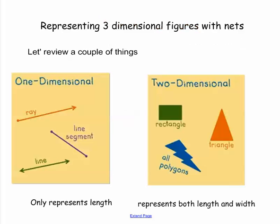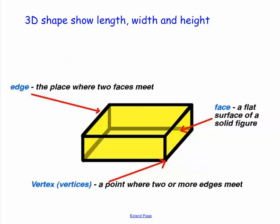Let's do a couple review things. Let's talk about what dimensional means. If we're looking at a one-dimensional shape, that's like a ray, a line, or a segment — just looking at one length. A two-dimensional shape is both looking at length and width, face and height — two different dimensions. So once we start talking about three-dimensional, we're looking at both the length, the width, and the height of a shape.